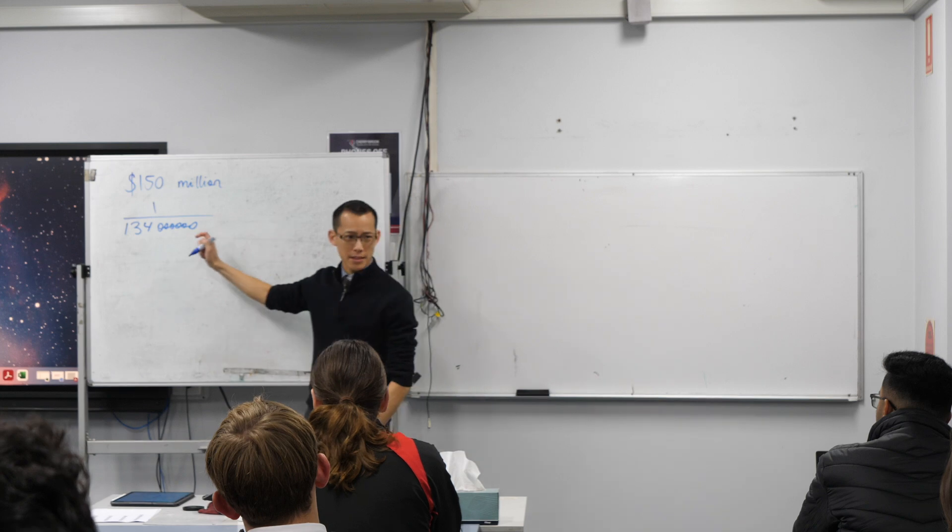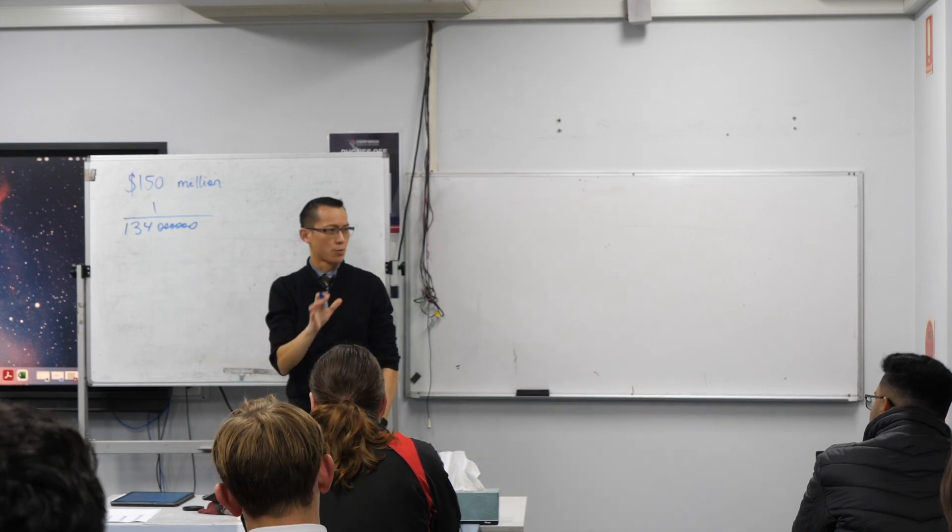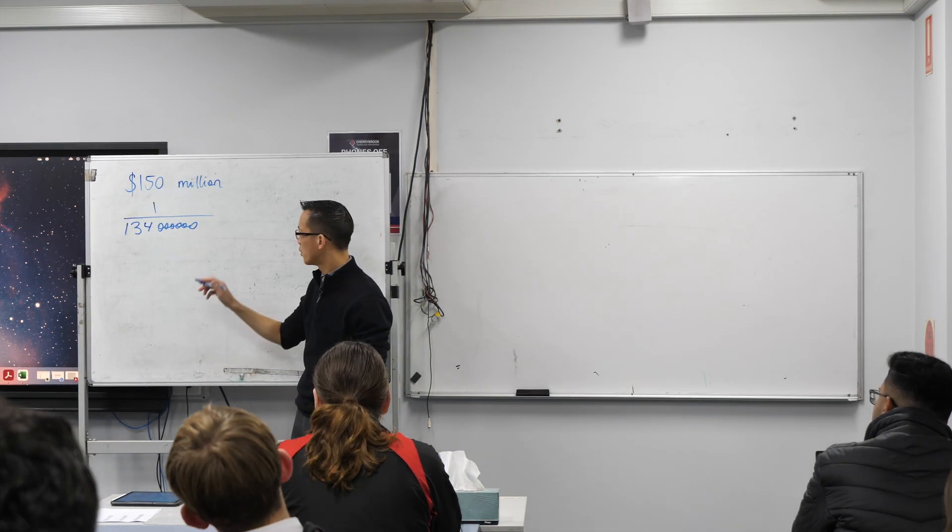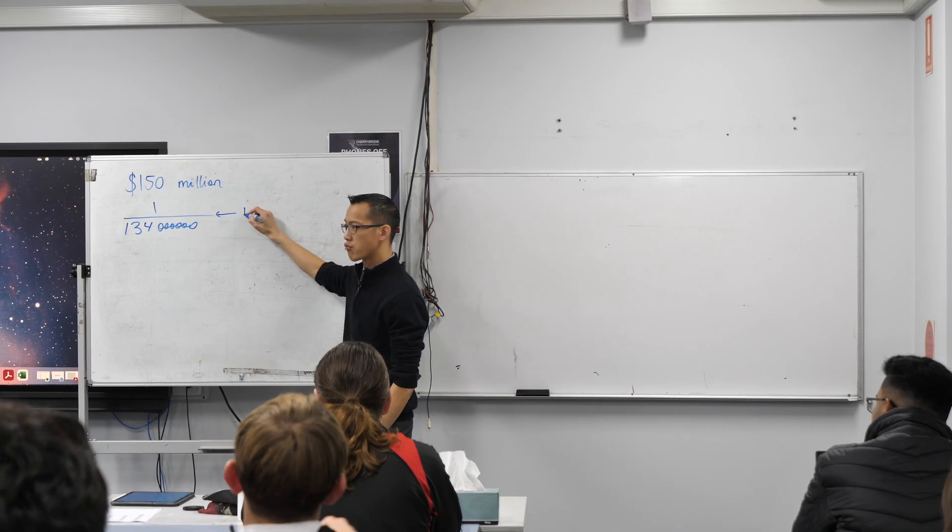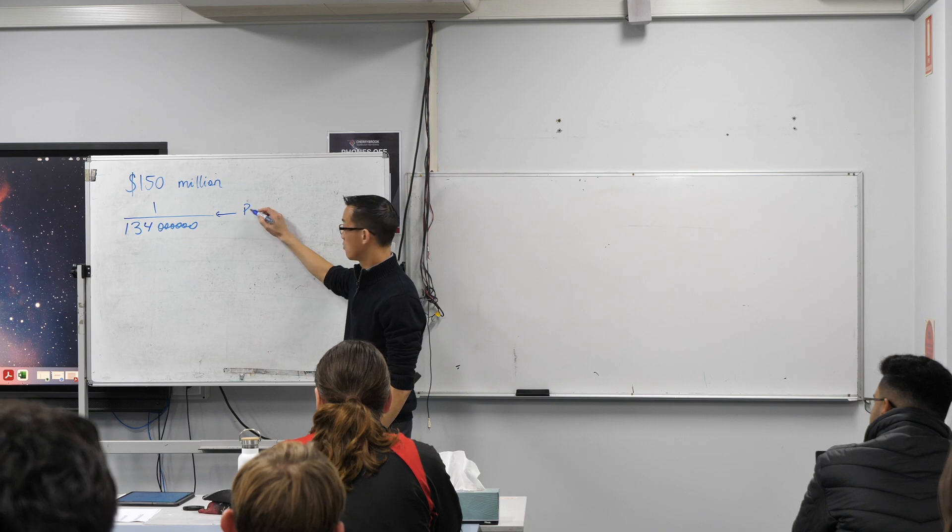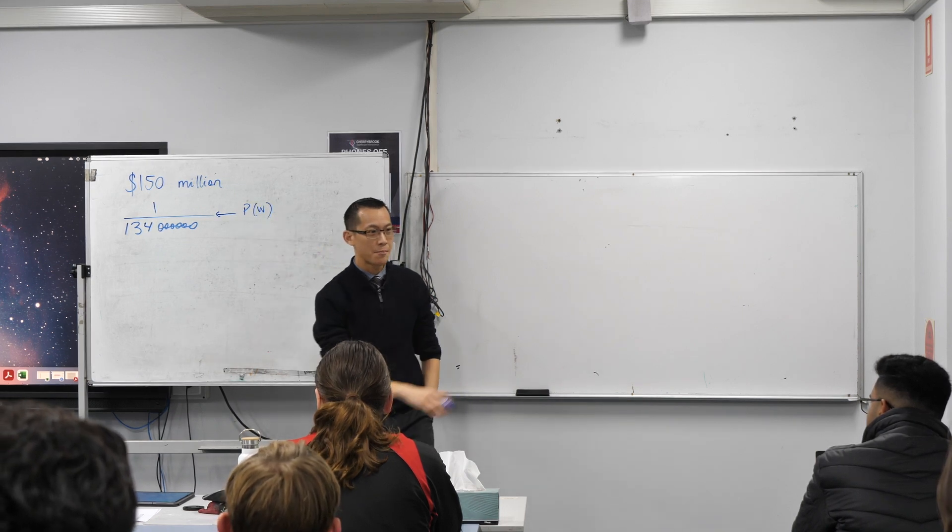Now, I want us to think about this for a minute. There's a reason why I'm starting with this example. We would call this the probability of winning. That was it, okay? The probability of winning.